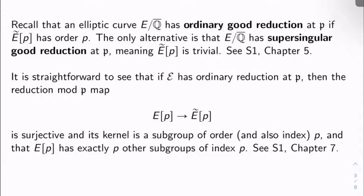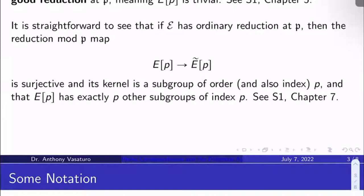It's straightforward to check. It's done in Silverman 1 chapter 7 that if E has good reduction at ℘, then the reduction mod ℘ map from the p-torsion of E to the p-torsion of Ẽ is surjective and that its kernel is a subgroup of order and also index p because remember the p-torsion of E is abstractly isomorphic to (ℤ/pℤ)².